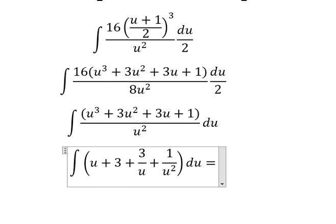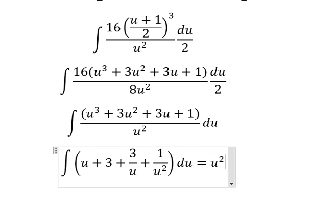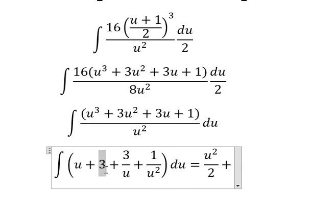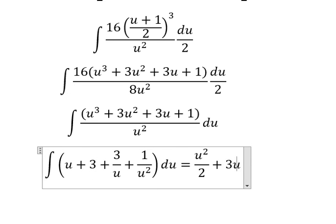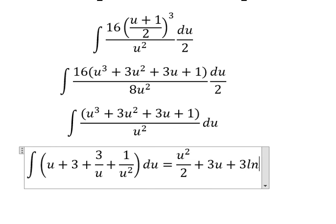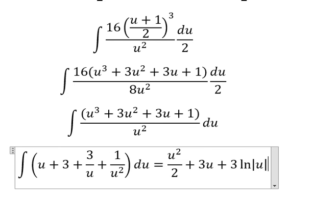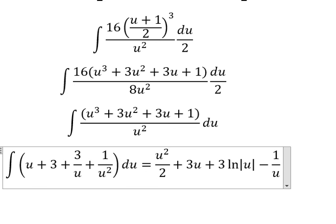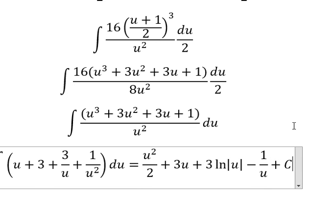Now we integrate each term. The integral of u is u²/2. The integral of 3 is 3u. The integral of 3/u is 3 ln of the absolute value of u. The integral of 1/u² is negative 1/u. Adding the constant of integration C.